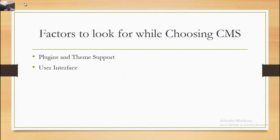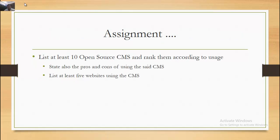Factors to look for while choosing a CMS include plugins and theme support, user interface, and customizability. Assignment: List at least 10 open source CMS and rank them according to usage, stating the pros and cons of each. Also list at least 5 websites using each CMS.